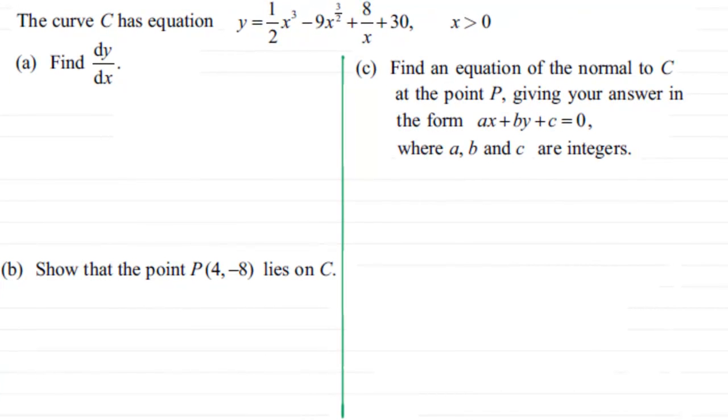This is an example on differentiation and finding equations of normals to a particular curve. You can try it and fast forward to check your working. The curve C has equation y = (1/2)x³ - 9x^(3/2) + 8/x + 30, where x > 0.